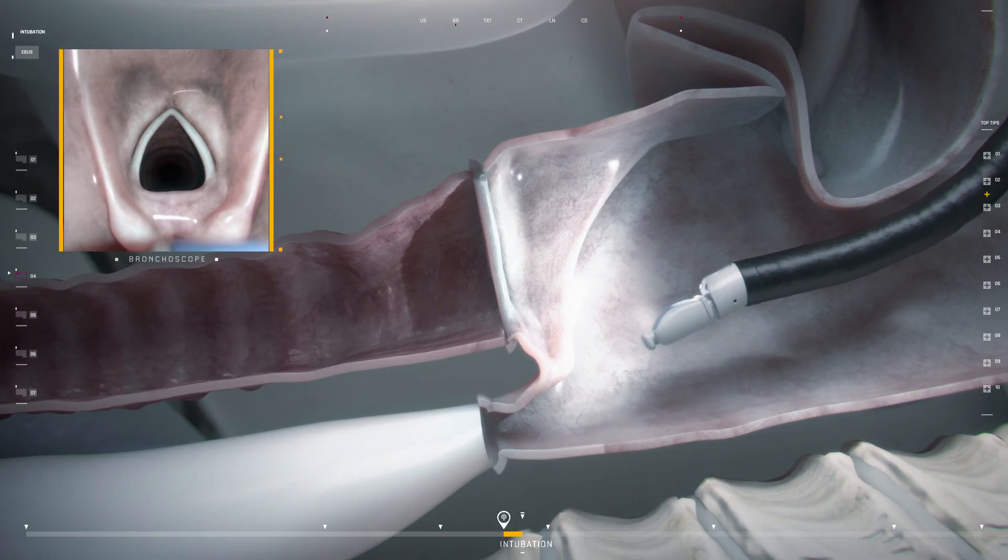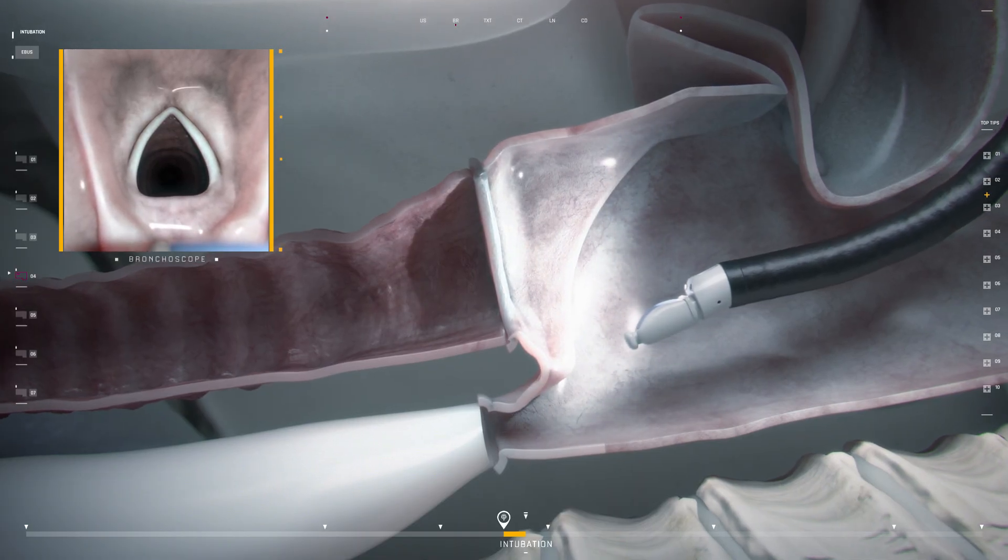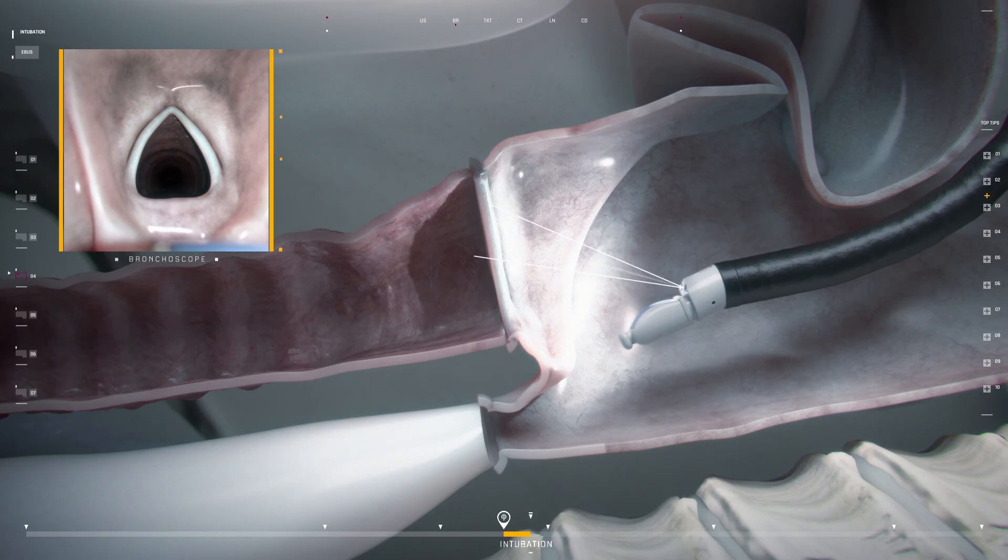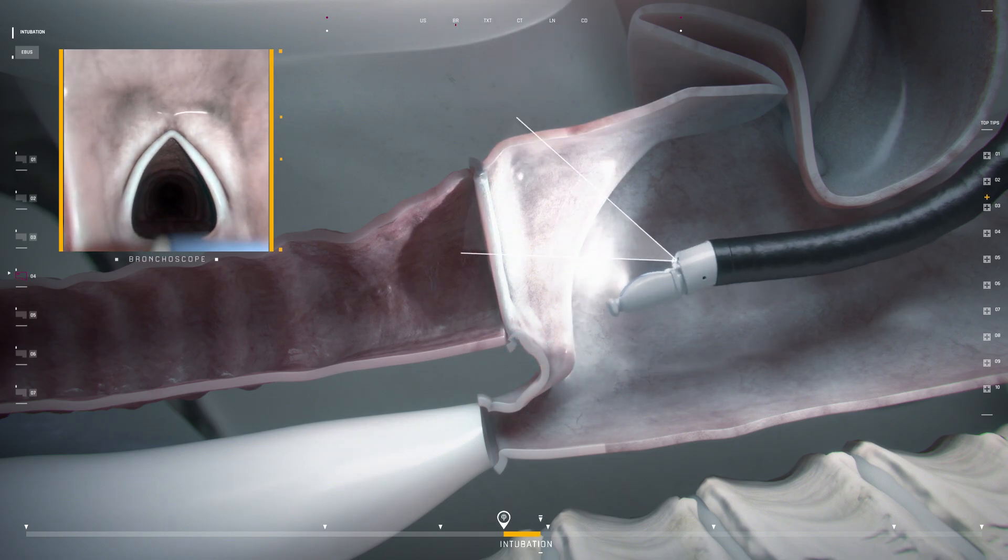As the bronchoscope approaches the cords, remember that the tip of the EBUS scope lies below the forward view of the scope. Thus, when traversing the vocal cords, the scope must be flexed to allow the tip to pass over the arytenoids and into the upper trachea.